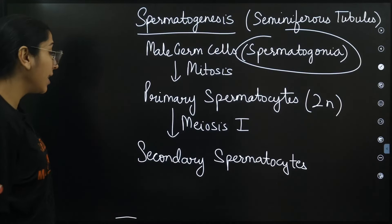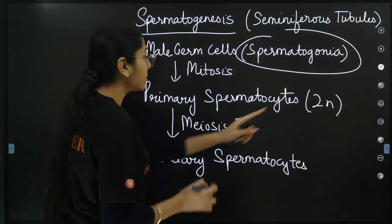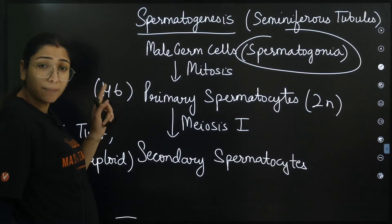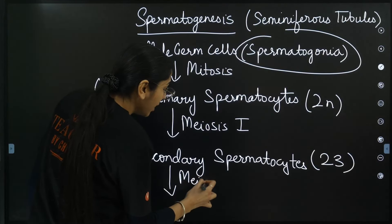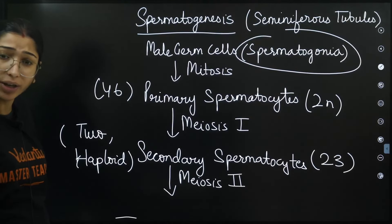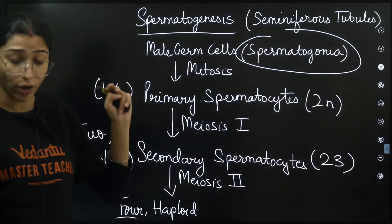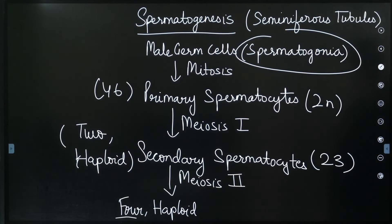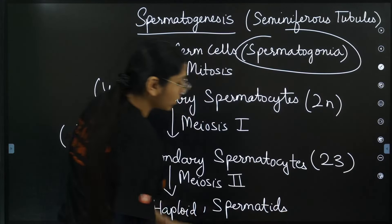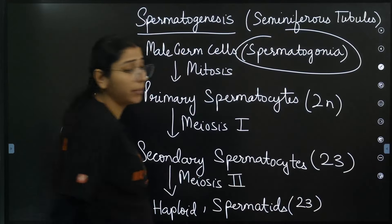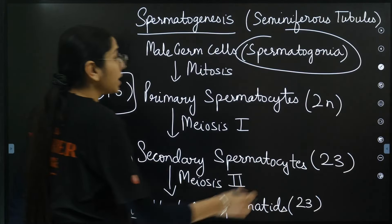So after meiosis I is complete, a dyad of cells is formed (two cells), and when meiosis II is complete, a tetrad of cells (four cells) is formed. These four haploid cells are called spermatids. This is a frequently asked question - the chromosome number of secondary spermatocytes and spermatids. Because of meiosis, the 46 chromosome number is reduced to 23. Spermatids then transform into spermatozoa through a process called spermeiogenesis.